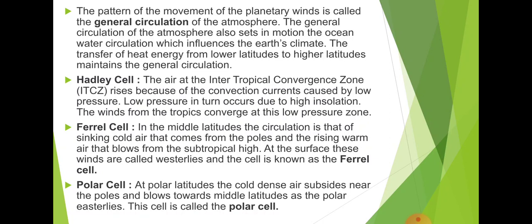At the polar latitudes, cold dense air subsides near the poles and blows toward the middle latitudes as the polar easterlies. This cell is known as the polar cell — the colder air present at the poles moves toward the 60° subpolar low pressure areas in both the northern and southern hemispheres.